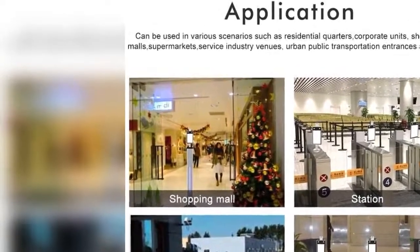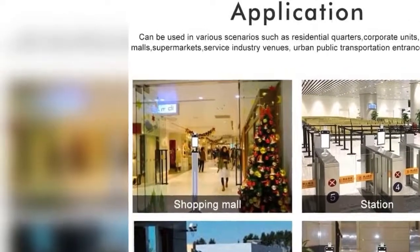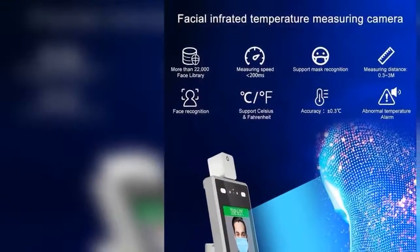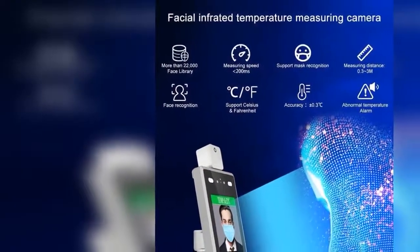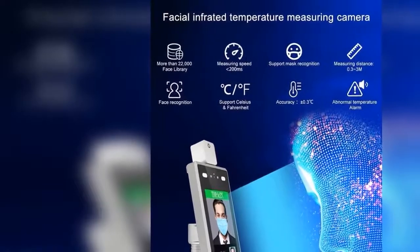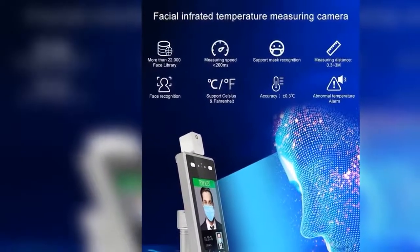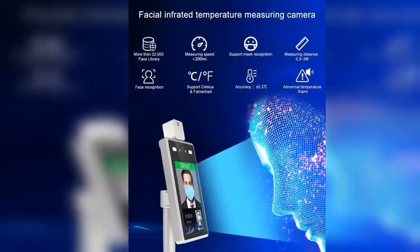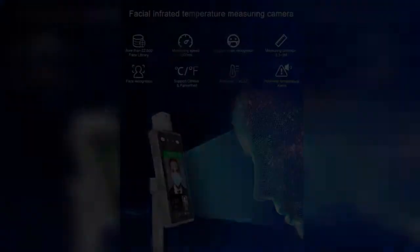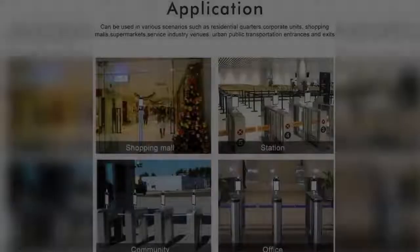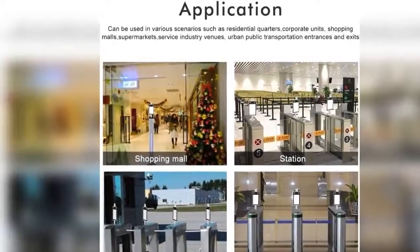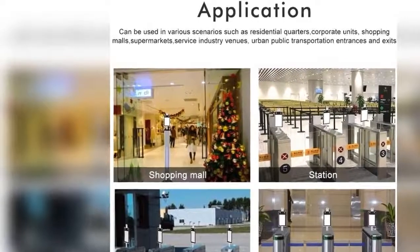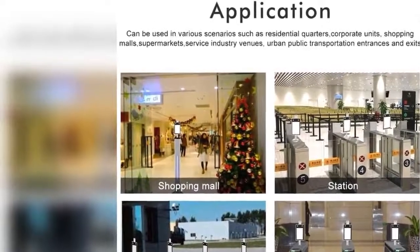Effective pixel: 2 megapixel, 1920 x 1080. Min lux: color 0.01 lux at F1.2 ICR; B/W 0.001 lux at F1.2. SNR: 50 dB AGC off. WDR: 80 dB.